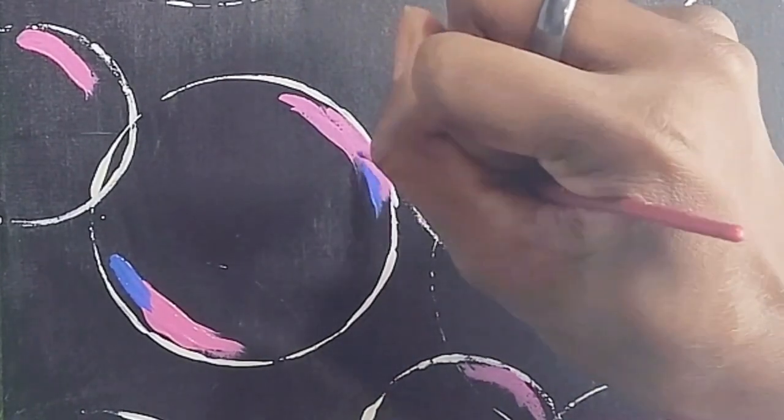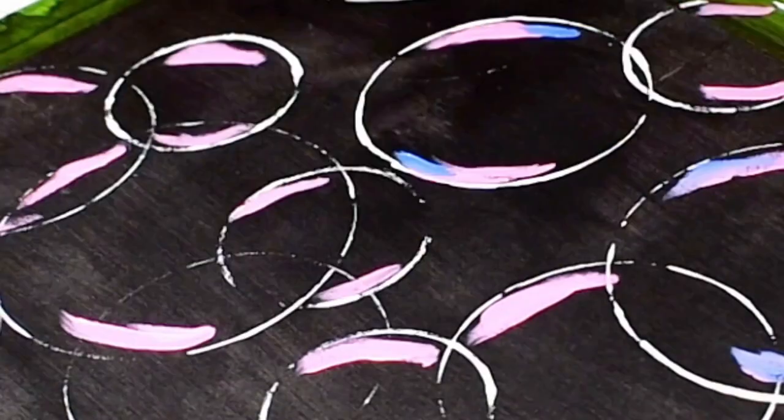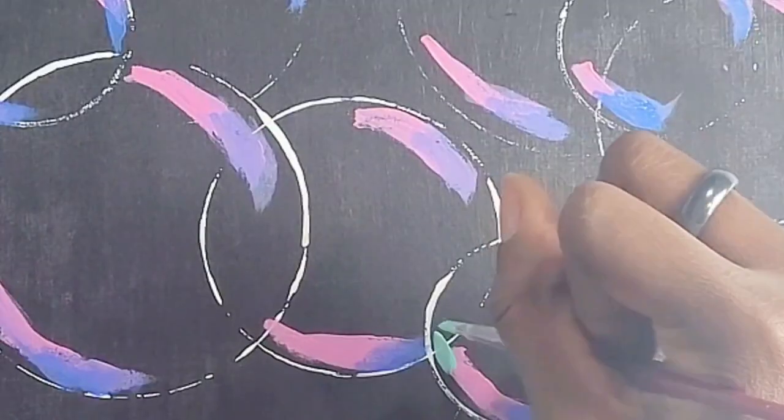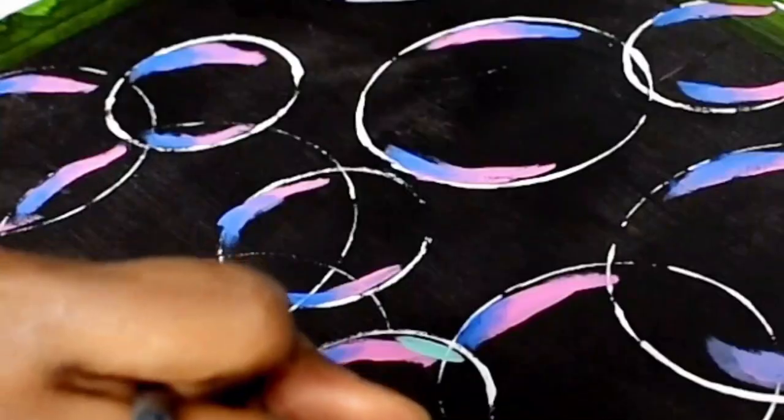Make short lines at the end of each pink line with blue. Then grab the green and make short lines right next to the pink.